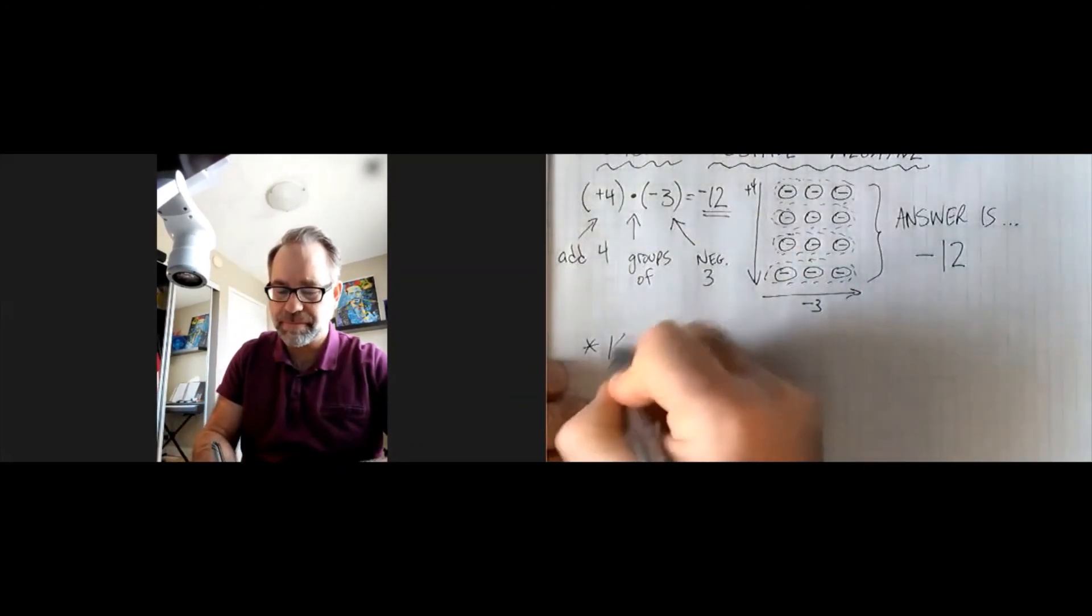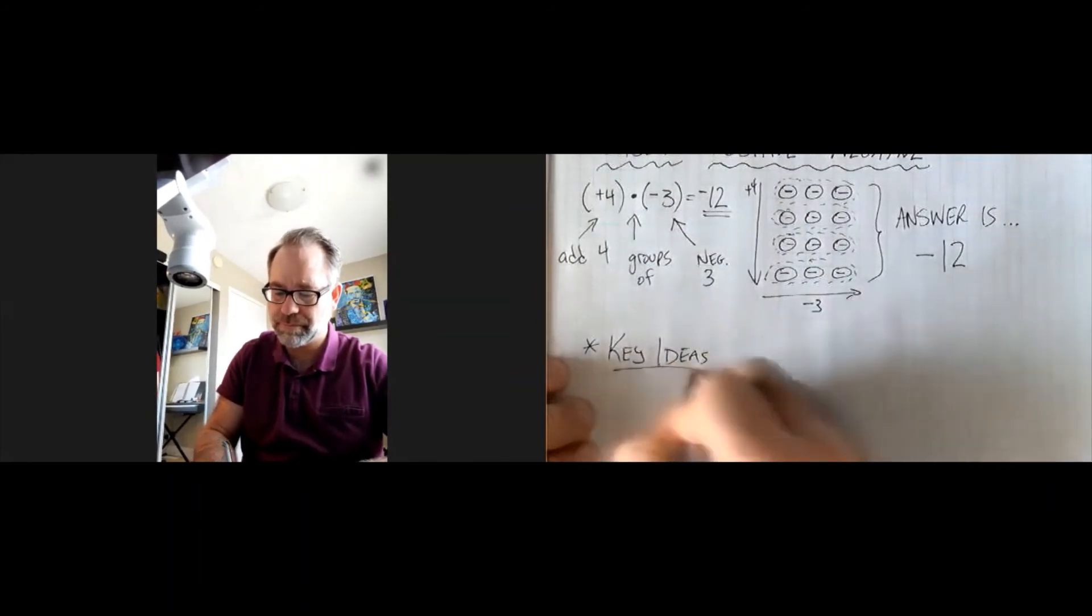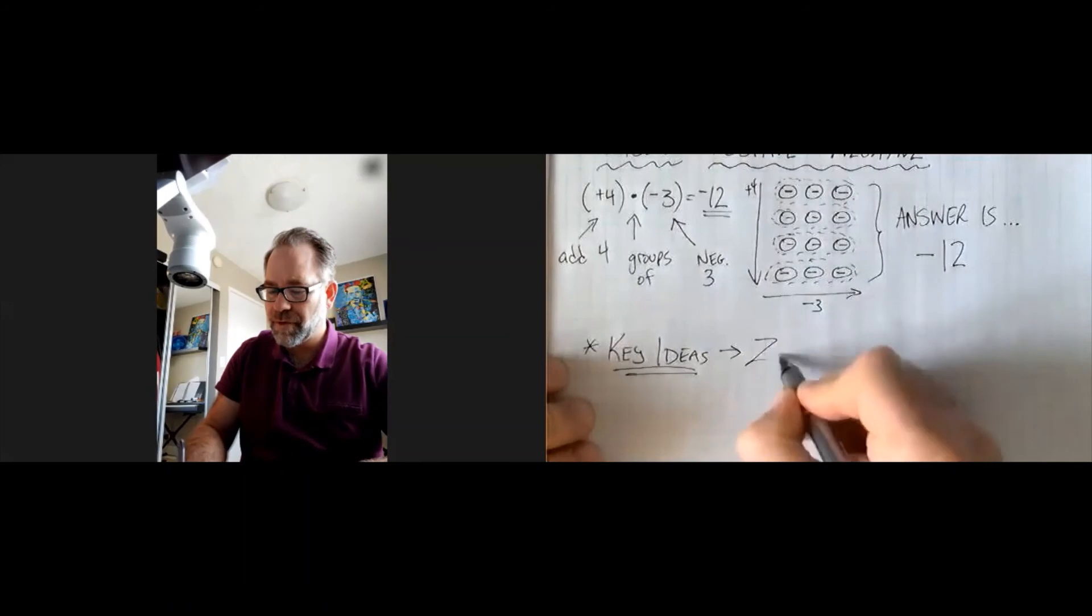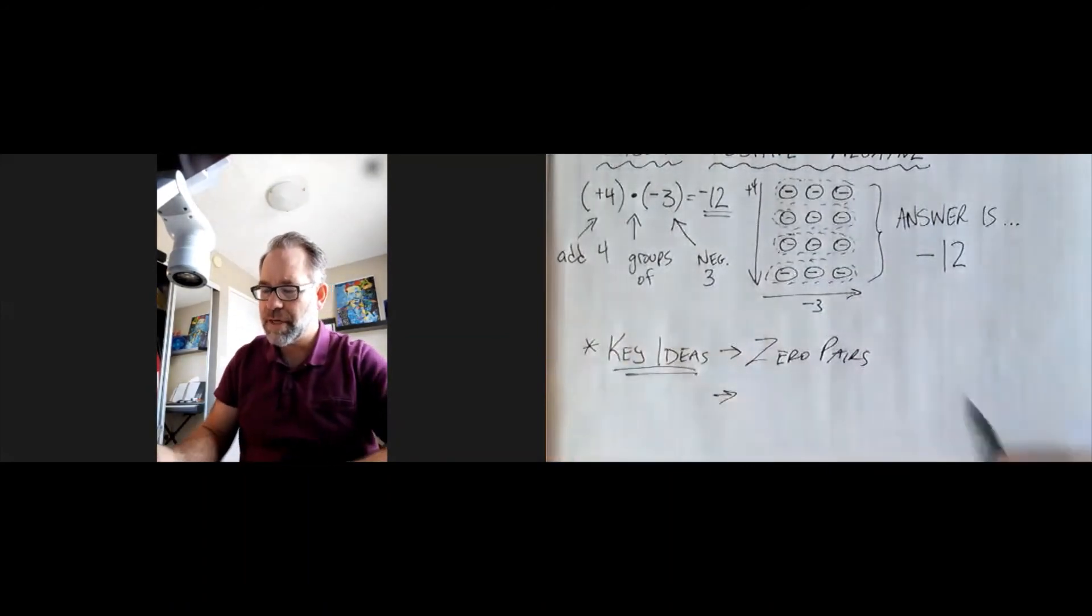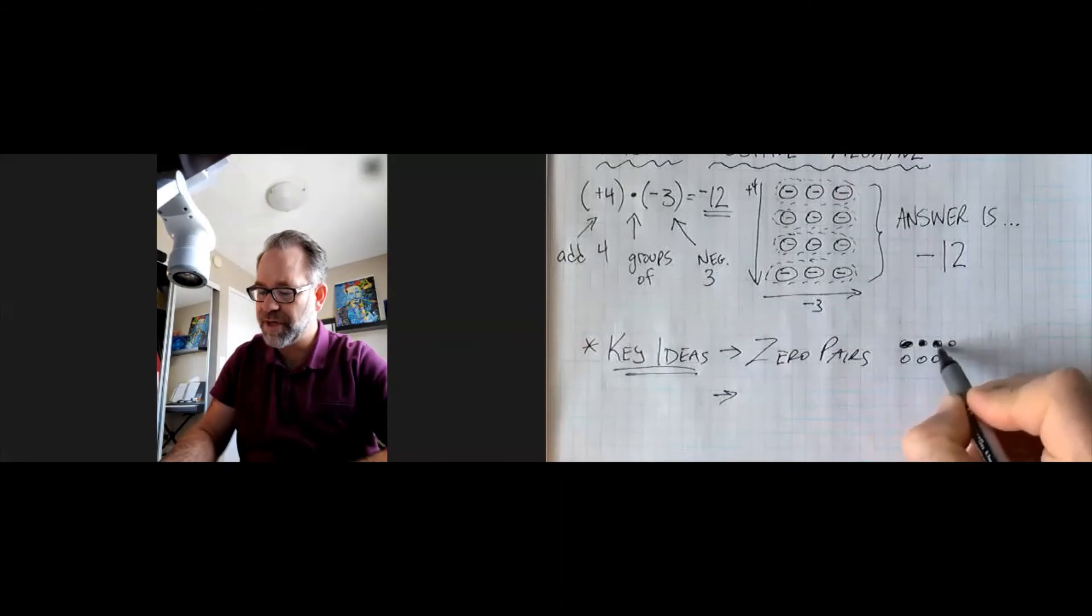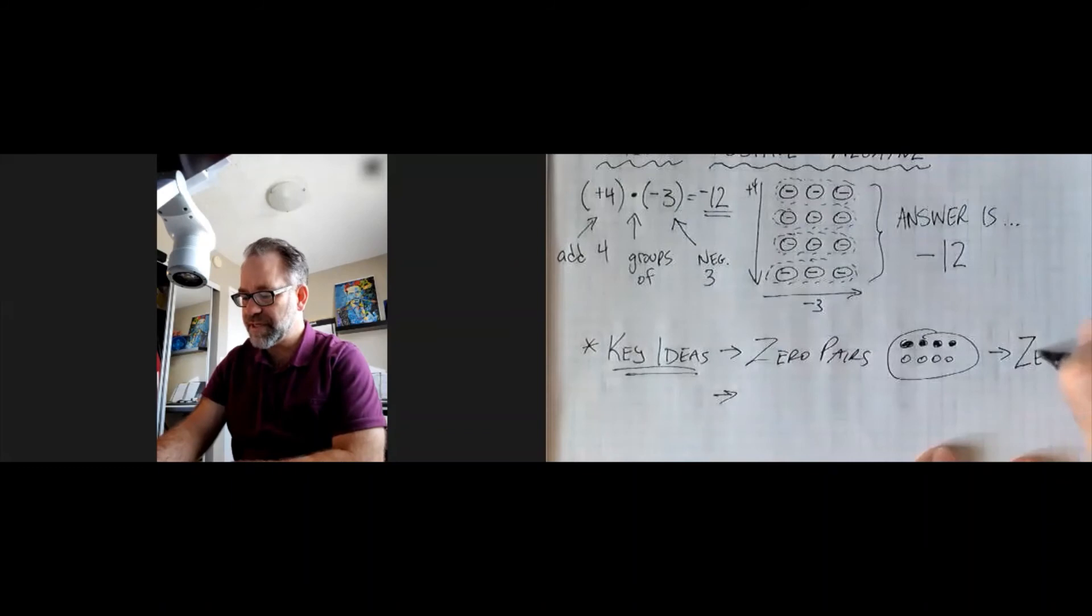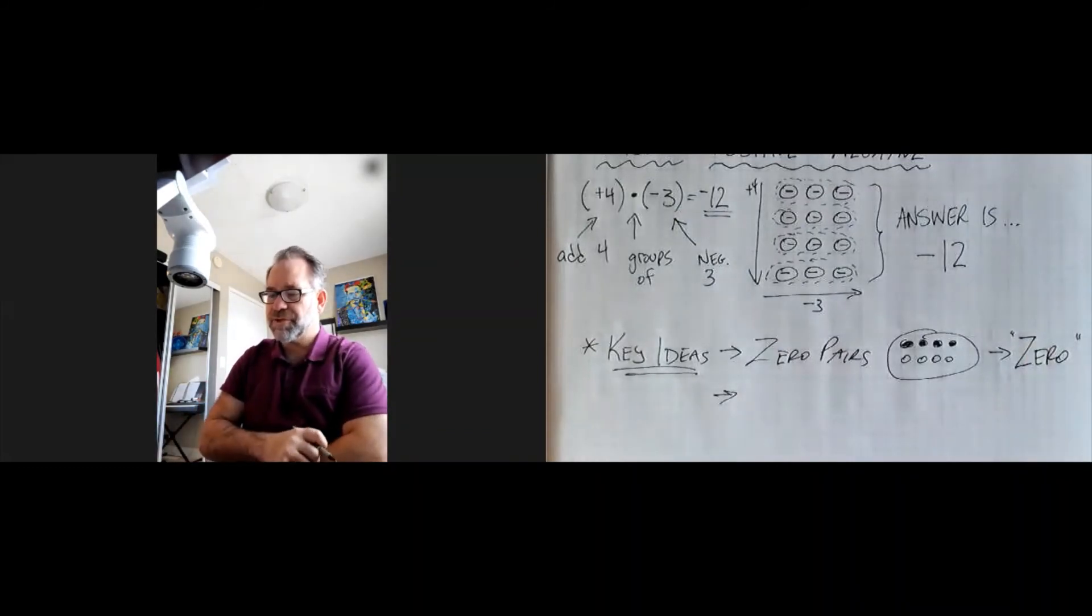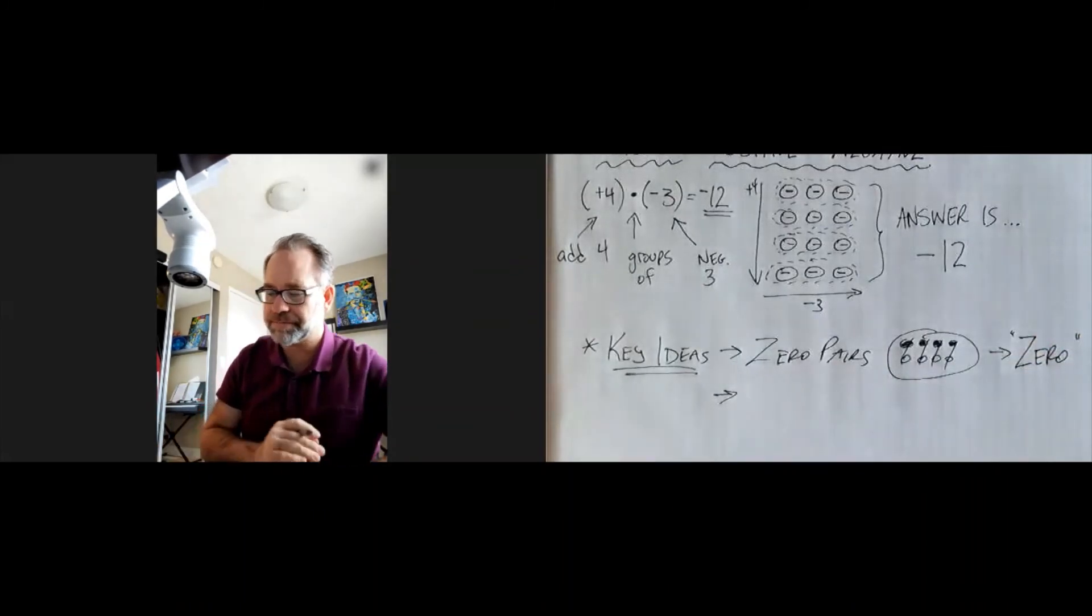Some key ideas so far. Remember zero pairs. If we had this number and these shaded ones were positive, this is another way to represent the number zero. So zero can look like this because each one of these cancel out.